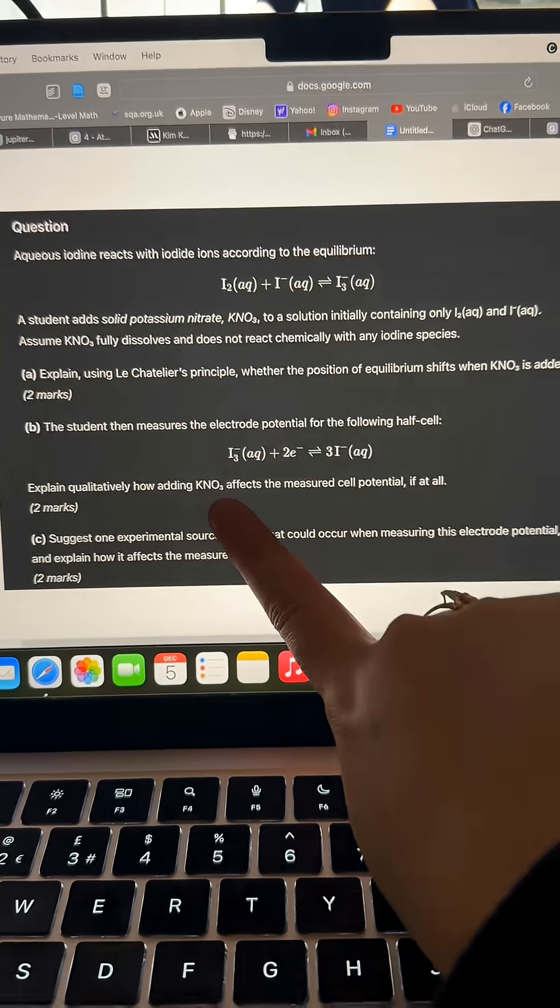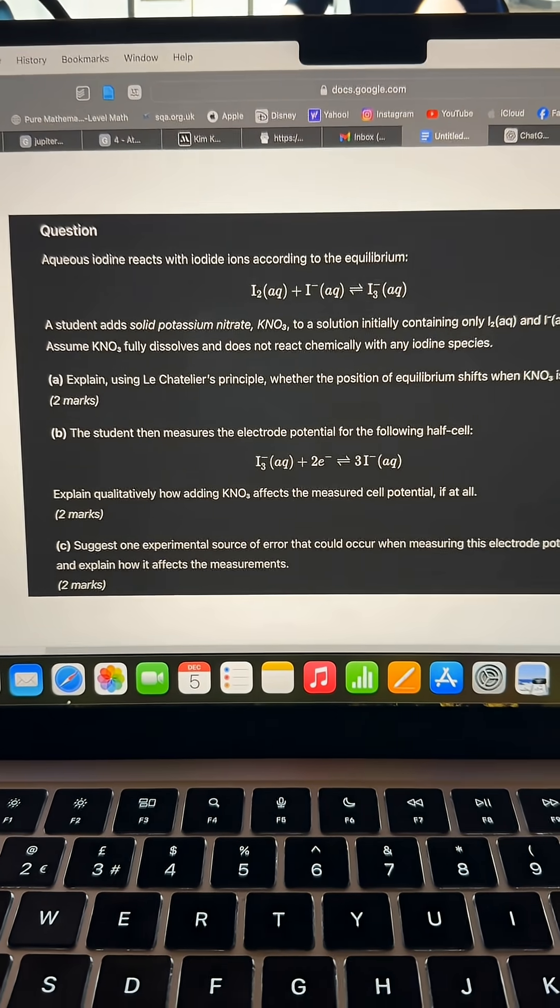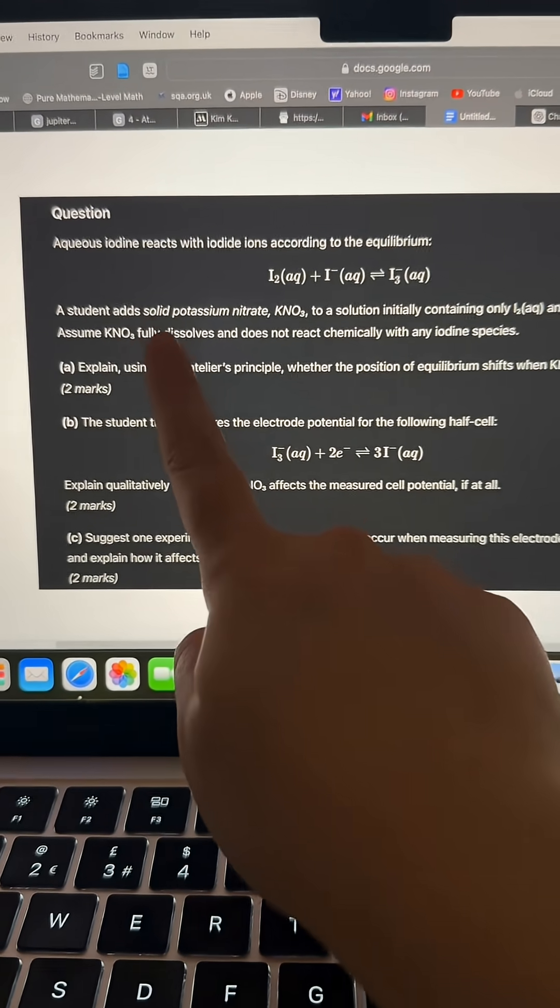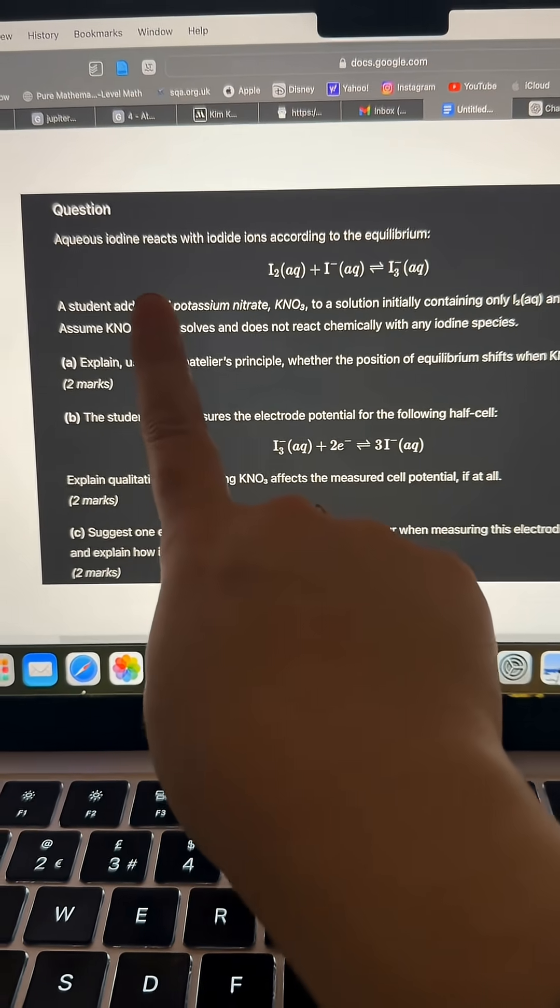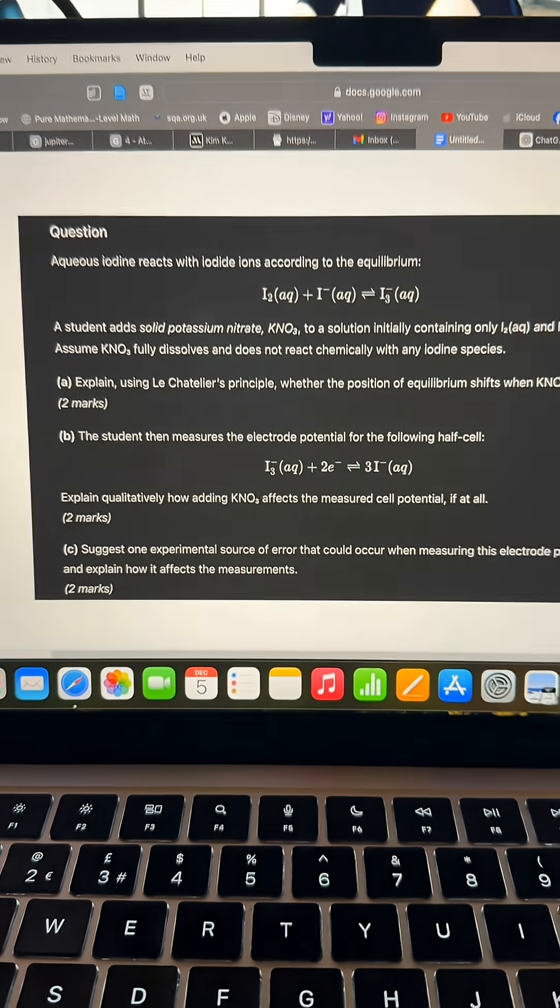Find anything related to KNO3 so it's right over here and look for the word where it doesn't seem like it belongs fully, aka the word that if you remove it the whole sentence still makes sense. In this case it's going to be solid. If I remove the word solid here, a student adds potassium nitrate to a solution, it still makes sense.